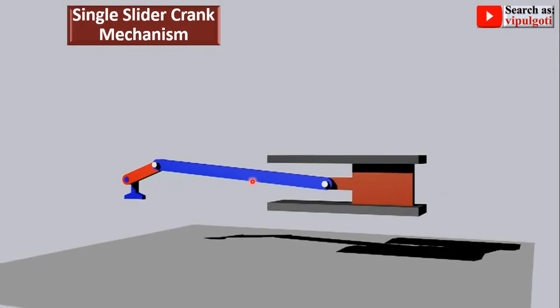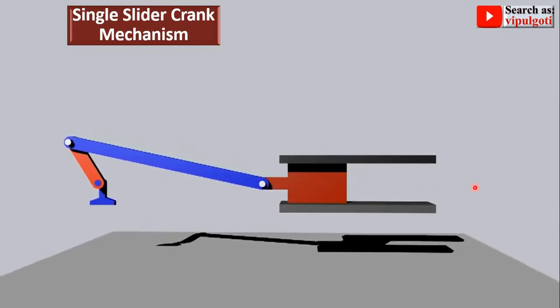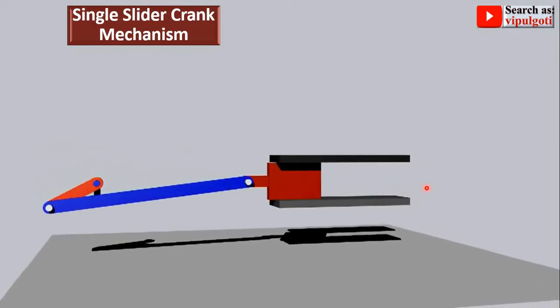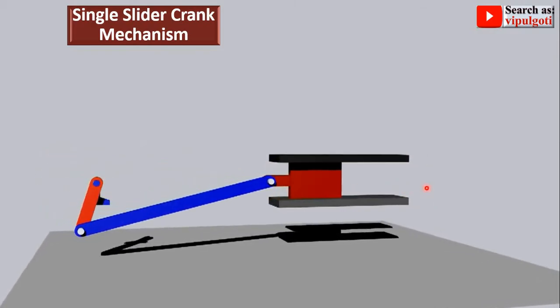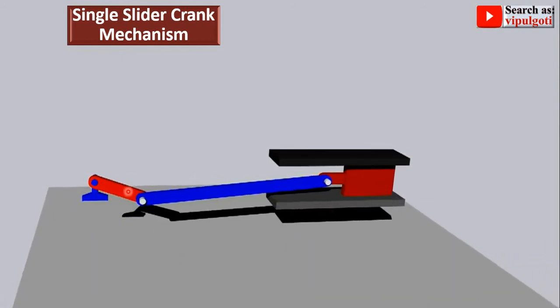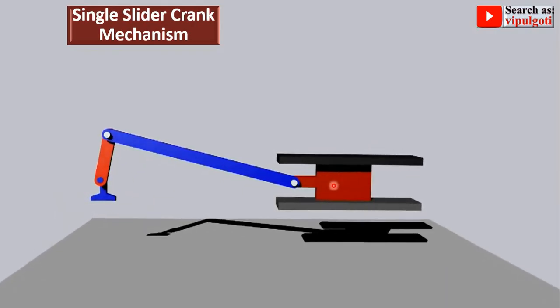Look at the animation of the single slider crank chain mechanism carefully so you can understand the description of the problem. Here this one is the crank, this is the connecting rod, and this one is called the slider or piston.